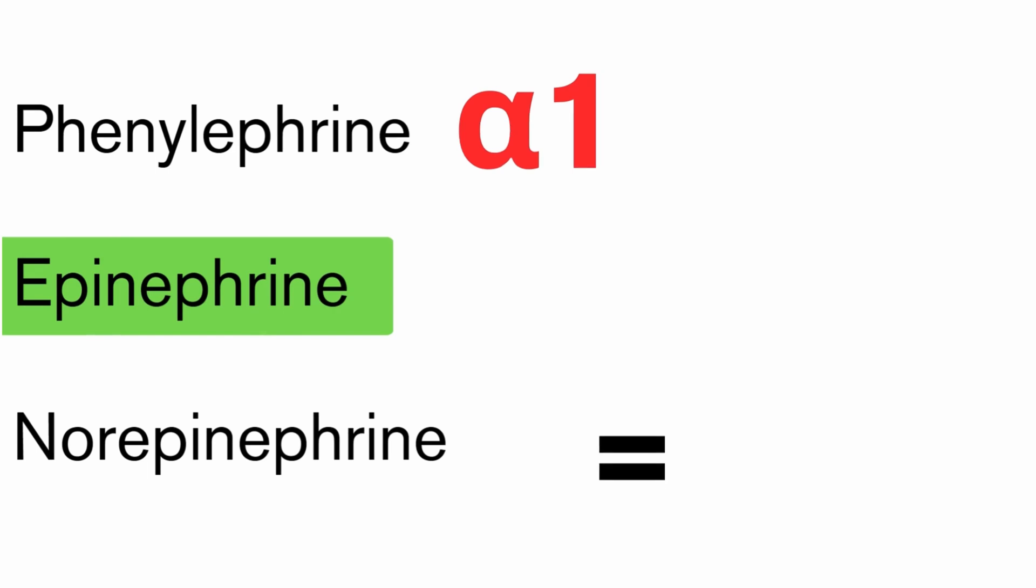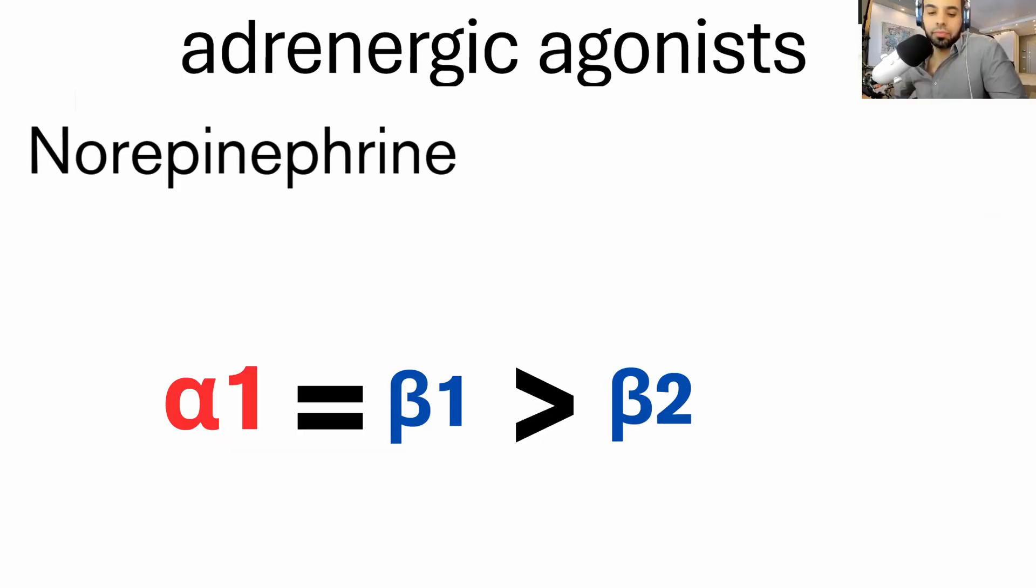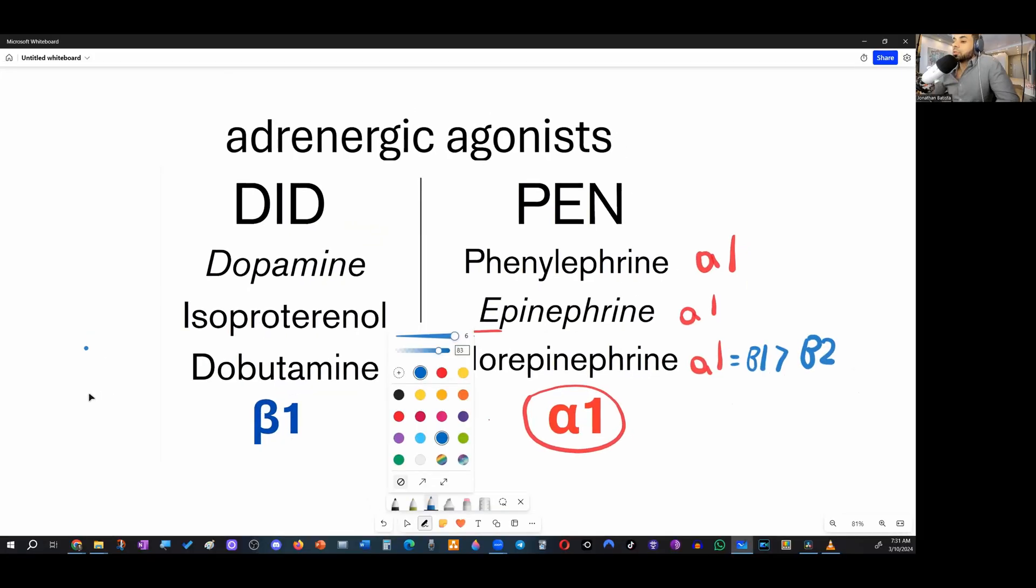Now epinephrine and norepinephrine are part of the DEN group, the catecholamine group. So at higher dosages, both will have affinity to alpha one. Now norepinephrine already has affinity for alpha one, regardless of the dose, but it also favors beta one followed by beta two. Now let's understand the exceptions. I'm going to circle the exceptions with a green circle.